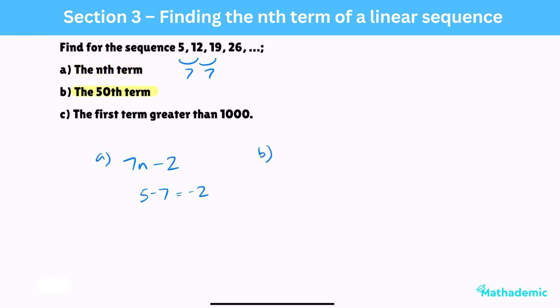For part b, the 50th term, we simply substitute the value of 50 in place of n. We get 7 times 50 minus 2. 7 times 50 is 350, and then taking away 2 gives us 348.